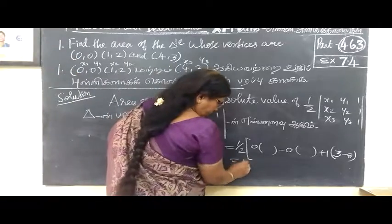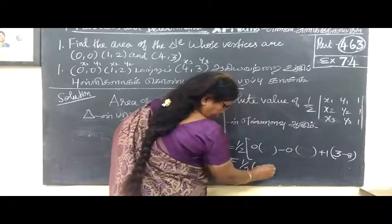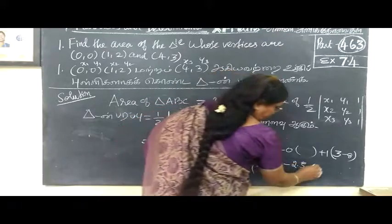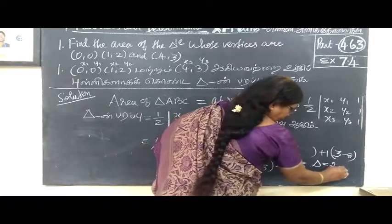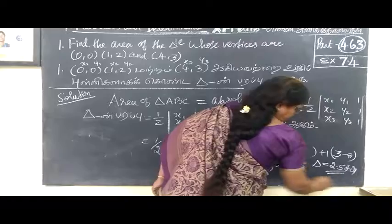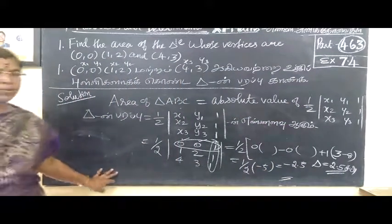So that is equal to half bracket, 3 minus 8 is minus 5. So this is minus 2.5, but area we are considering only plus value. So the answer for this delta is equal to 2.5.